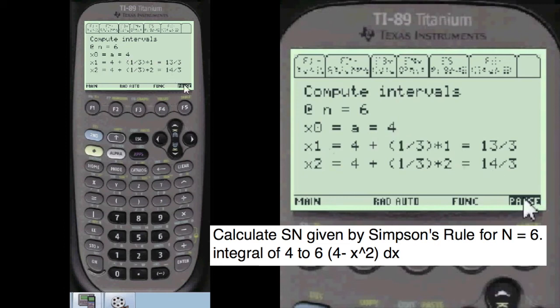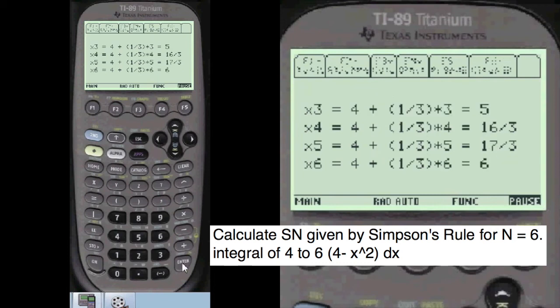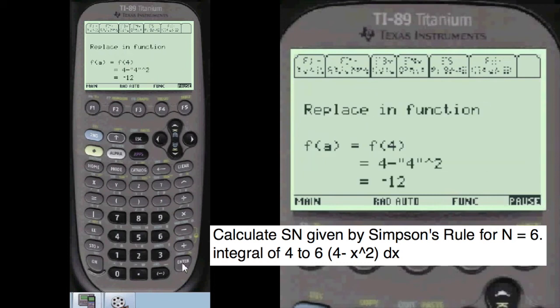And then x1, you write out 13/3 as it's computed. This is a plus the change of delta x, which we just computed, times 1 and then times 2, etc. And we do that for the six intervals.